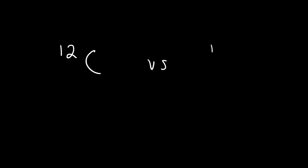So what exactly is an isotope? In this video we're going to talk about isotopes. Instead of giving you a definition I'm going to illustrate it with an example. Consider carbon-12 and carbon-13. These two substances are isotopes of each other. As you can see, isotopes are composed of the same element — both of these atoms are carbon atoms.